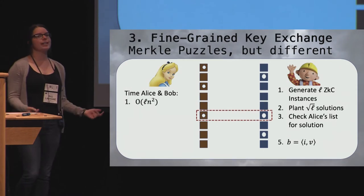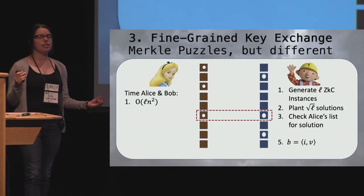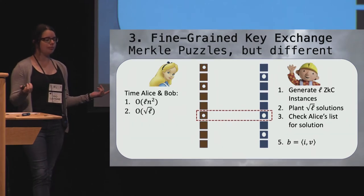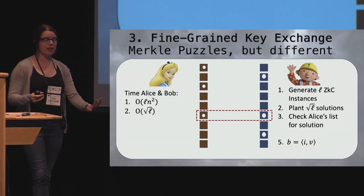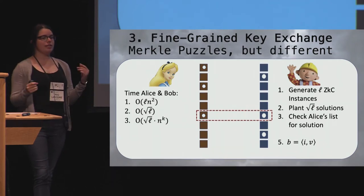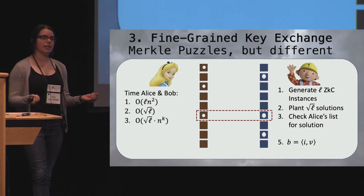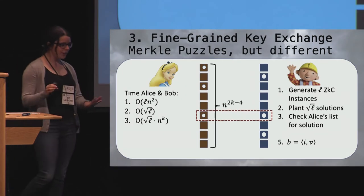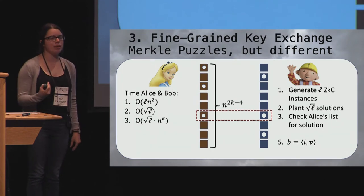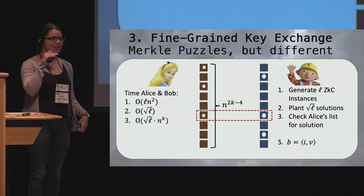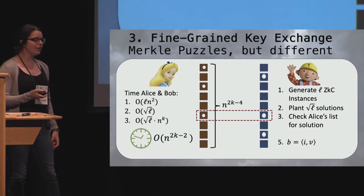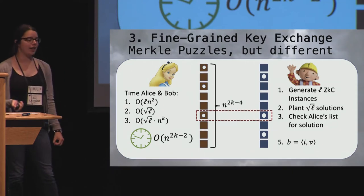So, let's go over how much time it takes for Alice and Bob to run this protocol. Well, they have to generate L of these zero k clique instances. Each zero k clique instance has like n squared edges. So, that's L n squared. They plant square root L solutions. That happens in constant time. Then, they have to do the heavy lifting. They have to solve square root L of these instances. So, that's square root L times n to the k. Now, it turns out the best value for L, in this case, that minimizes the amount of time Alice and Bob spend, is L equals n to the 2k minus 4. Giving a total time of n to the 2k minus 2 for Alice and Bob.